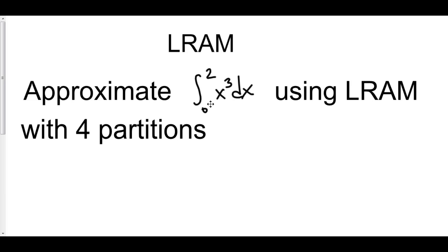Now, the first thing to think about is how far apart are 0 and 2? Well, 0 and 2 are 2 apart, and we are going to partition that space into four equal partitions.